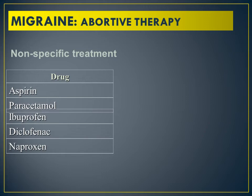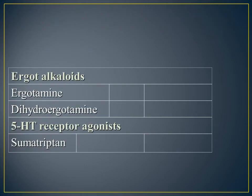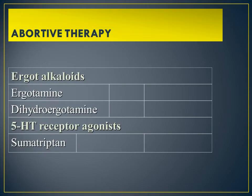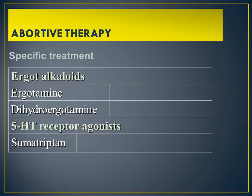For specific abortive therapy there are ergot alkaloids — ergotamine and dihydroergotamine. Then 5-HT receptor agonists, specifically sumatriptan, which belongs to the triptans group. Ergot alkaloids have already been studied in the autonomic nervous system. These constitute the specific treatment for acute migraine attacks.